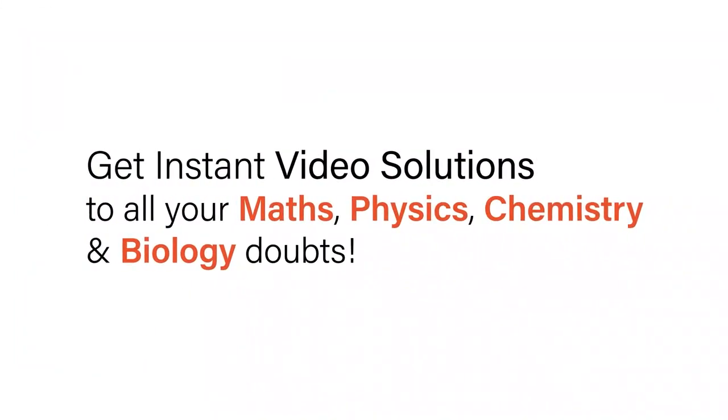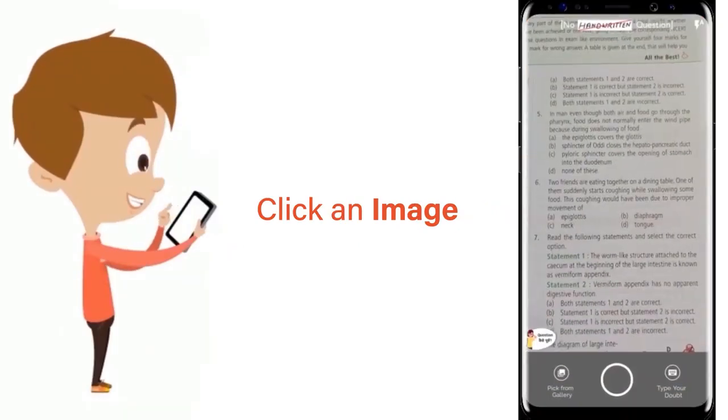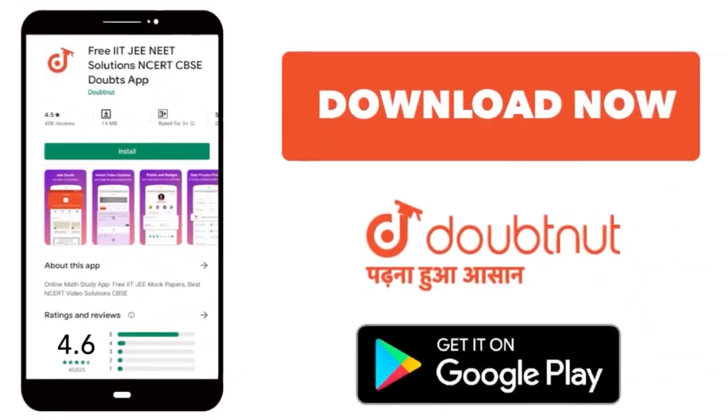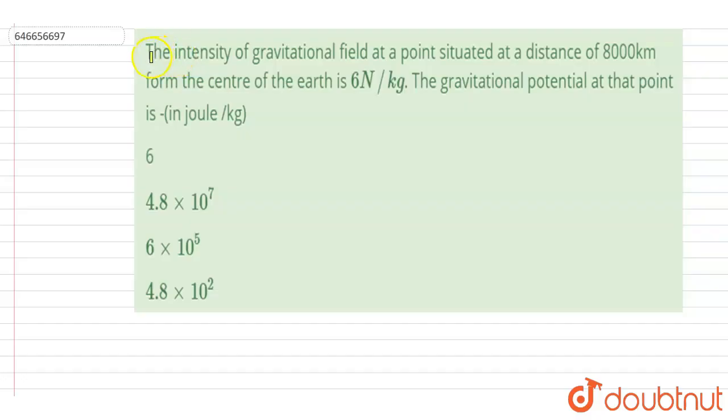With Doubtnet, get instant video solutions to all your math, physics, chemistry, and biology doubts. Just click the image of the question, crop the question, and get instant video solution. Download Doubtnet app today. Hello everyone, the intensity of gravitational field at a point situated at a distance of 8000 kilometers from the center of the earth is given here.